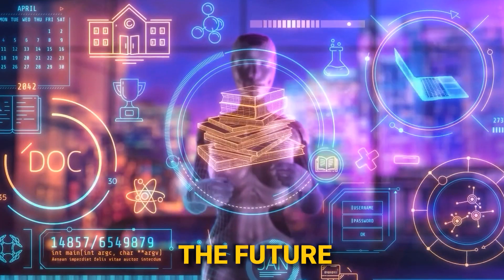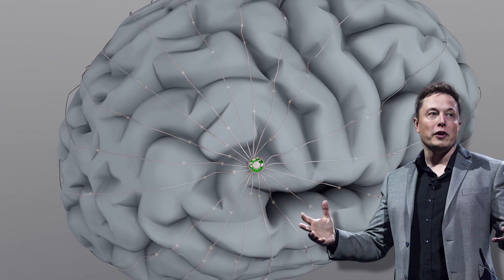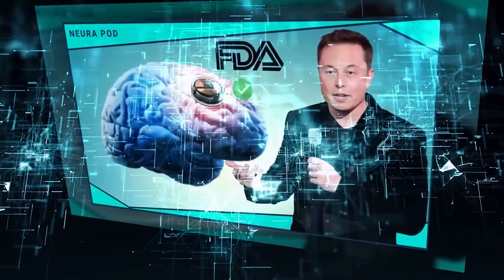Buckle up for a thrilling ride into the future. Neuralink, the brainchild of tech maverick Elon Musk, promises to reshape the course of humanity. You'll be able to save and replay memories. I mean, this is obviously sounding increasingly like a Black Mirror episode. It's not just an innovation, it's a revolution waiting to happen.